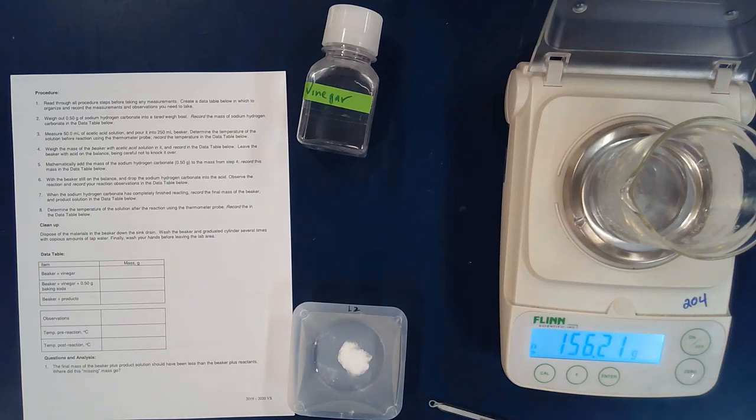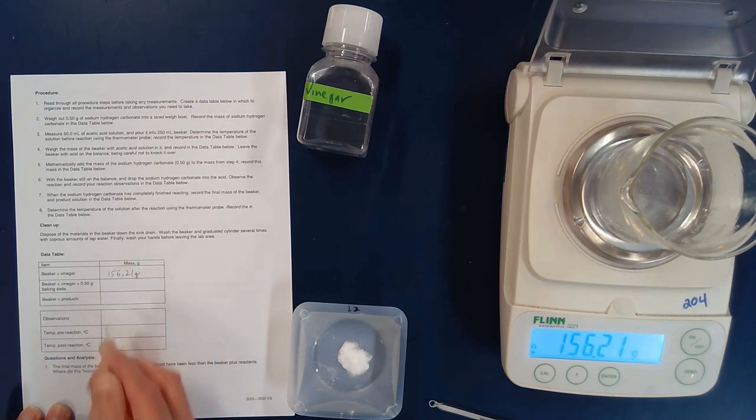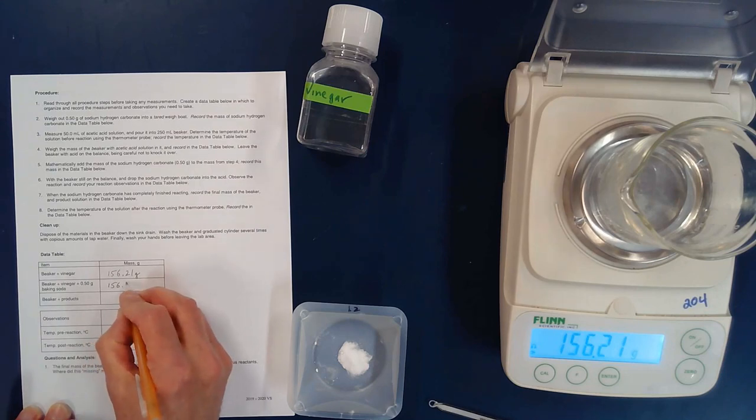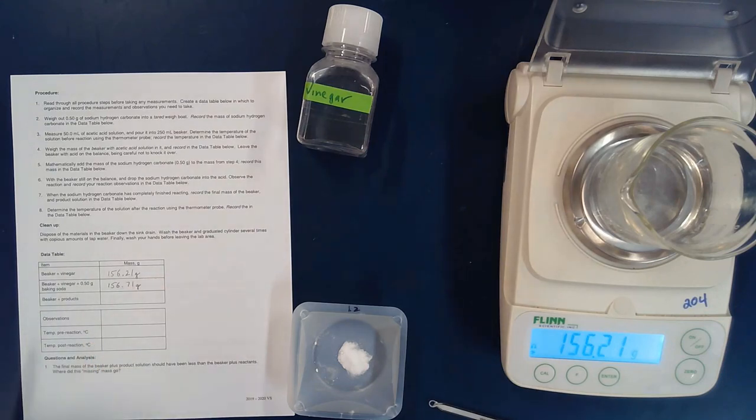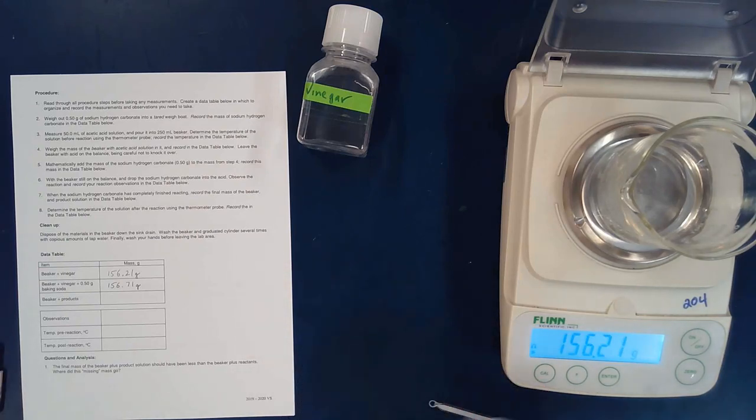But then the reaction is going to happen and carbon dioxide gas, as you will see, is going to bubble off. And so kind of surprisingly, but not surprisingly, the mass of the beaker with the product in it should go down. So right now I'm going to record this. Again I know I have 0.5 grams of baking soda, so I'm going to add that 0.5 grams. And so my total mass of the beaker and the reactants will be that 156.71 as soon as I dump the baking soda in there.